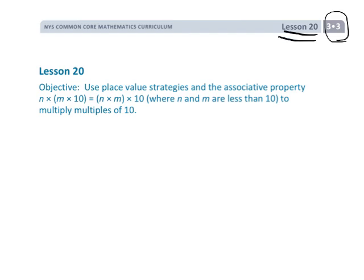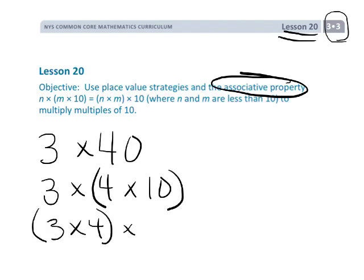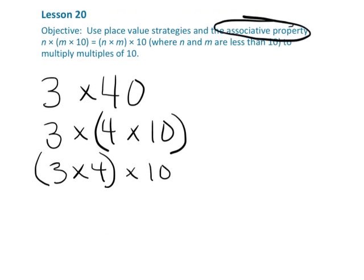And that is Grade 3, Module 3, Lesson 20, using the associative property to in an easier fashion solve 3 times 40 by using the associative property to change that to 4 times 10, which then becomes 3 times 4 times 10, which then becomes 12 times 10, which is 120.